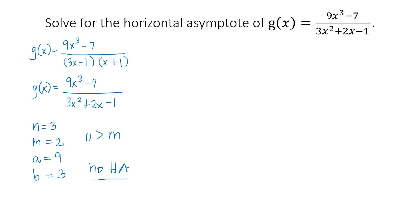To solve for the slant or oblique asymptote, we have to divide the numerator by the denominator — either by long division or synthetic division. So let's divide 9x³ − 7 by 3x² + 2x − 1.